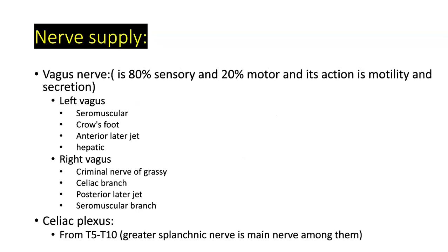The vagus nerve is approximately 80% sensory and 20% motor; its functions include motility and secretion. The left vagus nerve branches include the seromuscular, crow's foot, posterior nerve of Latarjet, hepatic, and celiac branches. The right vagus nerve has four branches: criminal nerve of Grassi, celiac branch, posterior nerve of Latarjet, and seromuscular. The celiac plexus is formed from the greater splanchnic nerve (T5-T10).